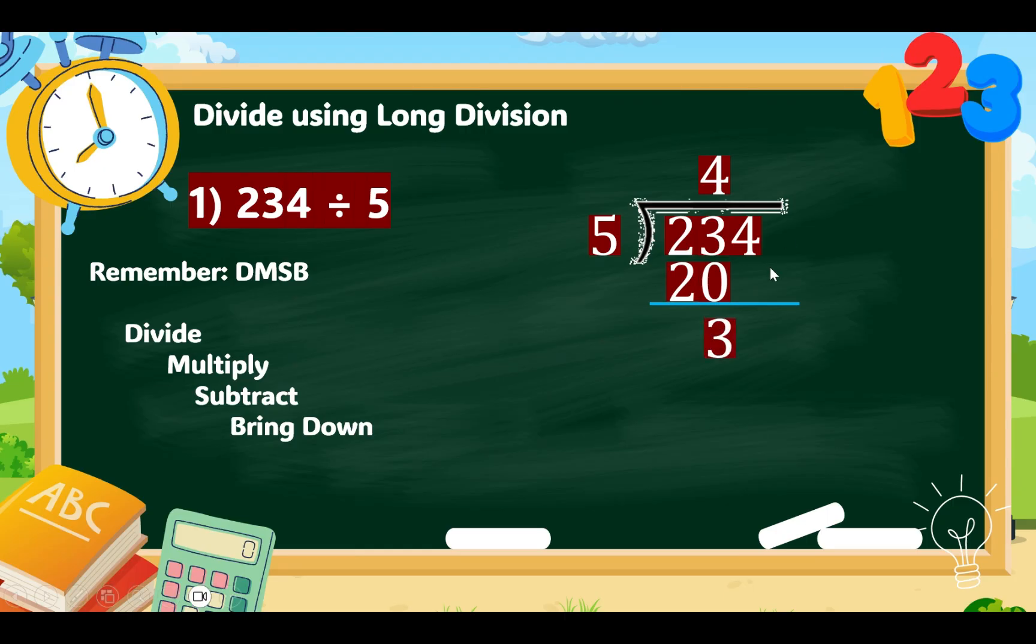Now, let's bring down 4. And then, repeat the process. 34 minus 30, we have a remainder 4. Our quotient is 46, remainder 4.